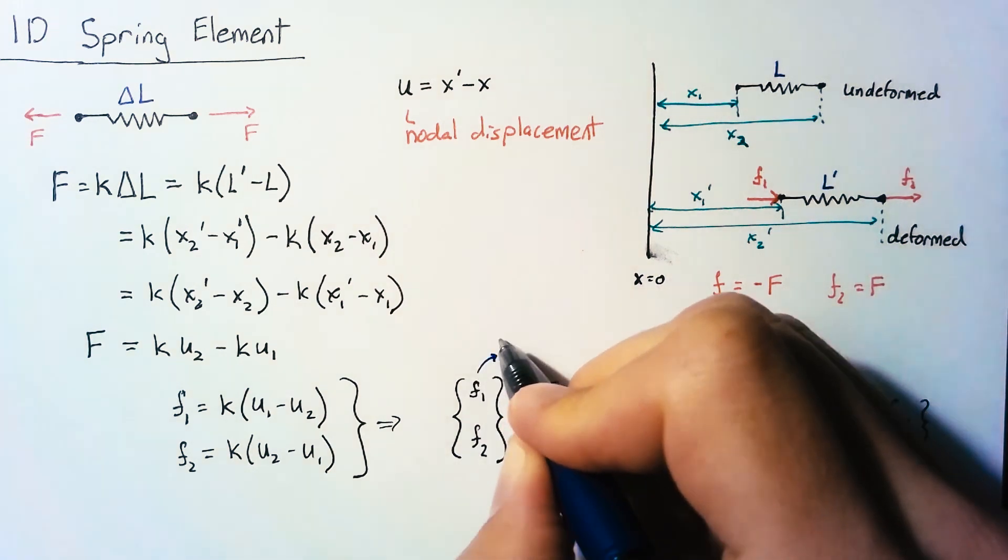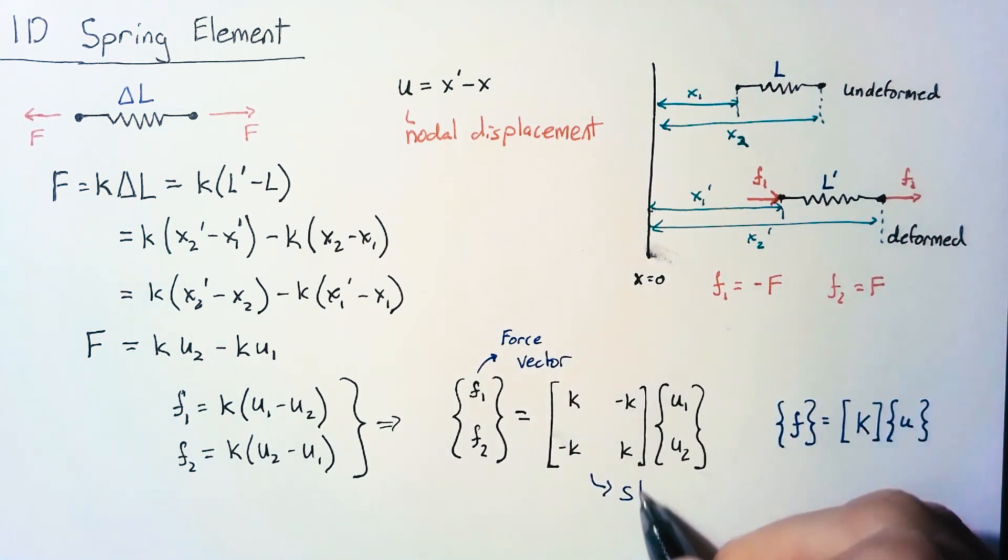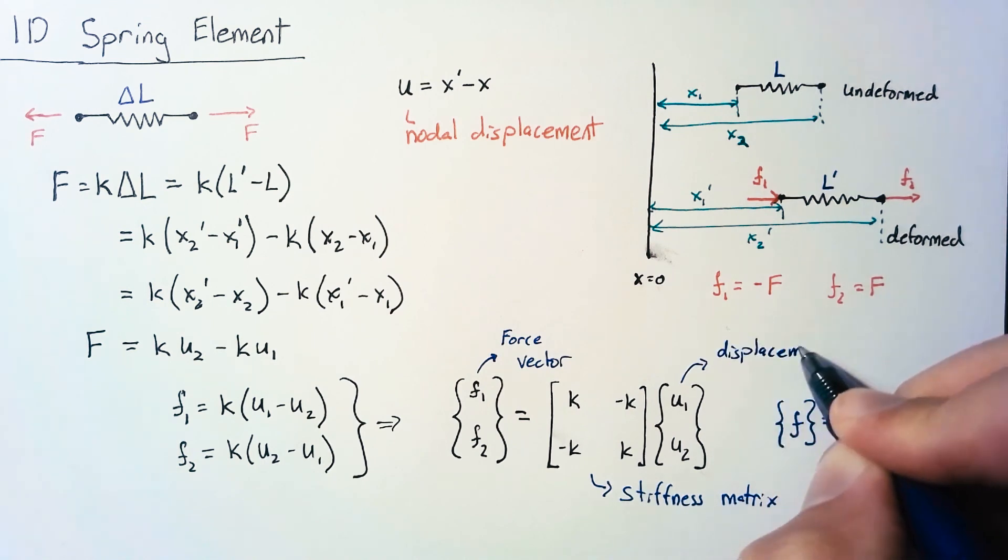Finishing up the terminology here, this is our force vector, this is our stiffness matrix, and this is our displacement vector.